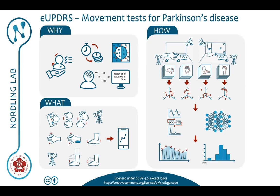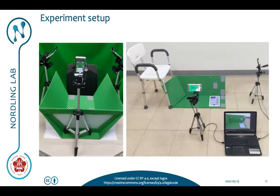The UPDRS test set consists of multiple tests and we have carried out a subset of these in order to be able to do method development. Here you can see images of our experiment setup. We have both recordings of the hand using five different cameras and also recordings of the foot or leg using four different cameras.